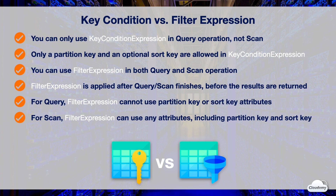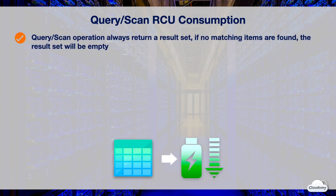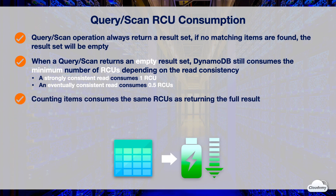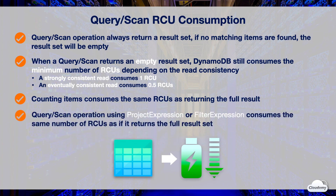Filter expression determines which items within the results should be returned and discards all other items. For query operations, filter expression cannot contain partition key or sort key attributes. For scan, you can specify any attributes in a filter expression, including partition key and sort key attributes. Query and scan operations always return a result set; if no matching items are found, the result set will be empty. DynamoDB still consumes minimum RCUs — a strongly consistent read consumes one RCU and an eventually consistent read consumes half an RCU. You can use query or scan to count items; counting consumes the same RCUs as returning those items. Using projection expression or filter expression may result in a smaller subset of items returned, but it has no impact on the item size calculations — the same number of RCUs as the full result set is consumed.